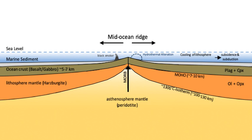Two processes—ridge push and slab pull—are thought to be responsible for the spreading seen at mid-ocean ridges, and there is some uncertainty as to which is dominant. Ridge push occurs when the growing bulk of the ridge pushes the rest of the tectonic plate away from the ridge, often towards a subduction zone. At the subduction zone, slab pull comes into effect—simply the weight of the tectonic plate being subducted, dragging the rest of the plate along behind it. The slab pull mechanism is considered to be contributing more than ridge push.